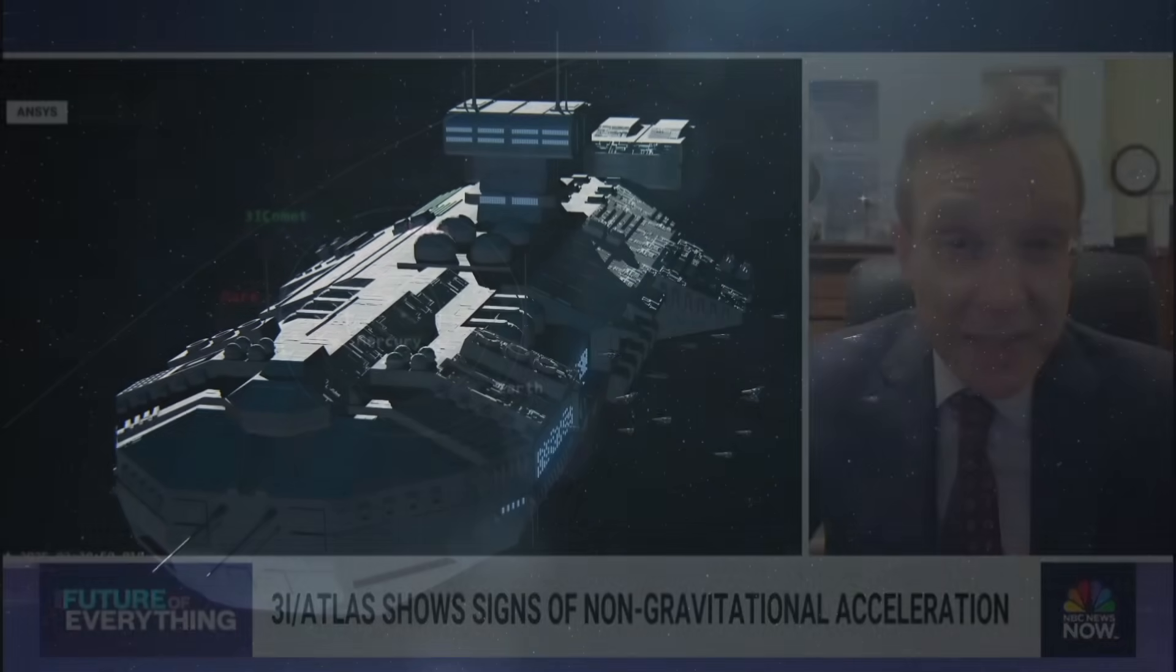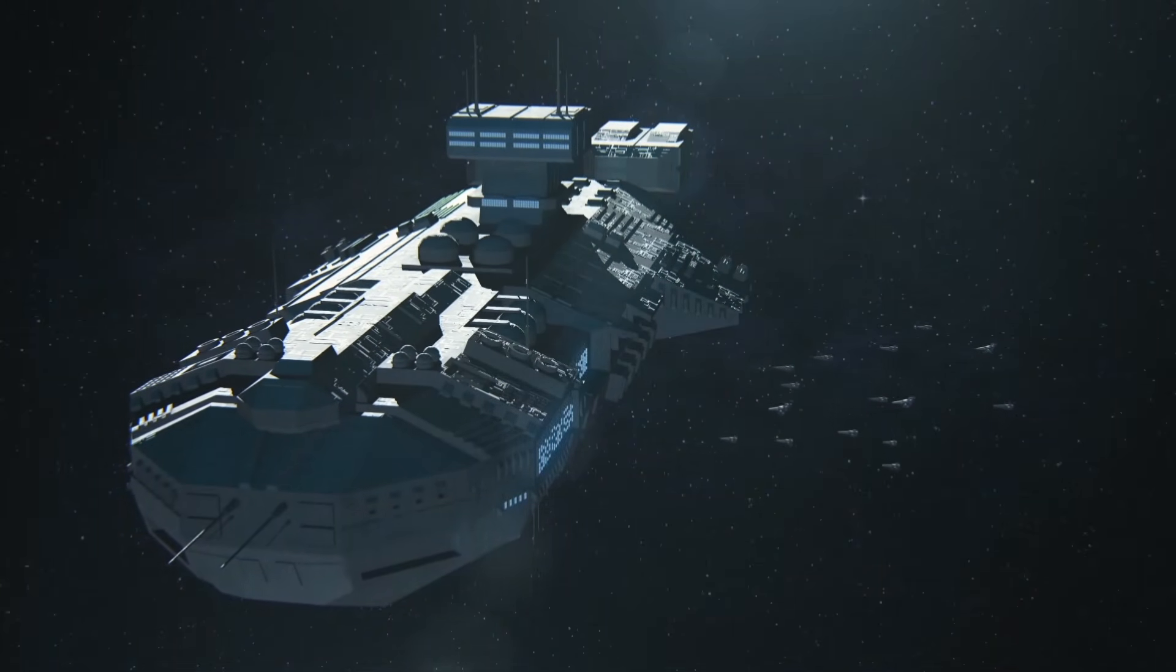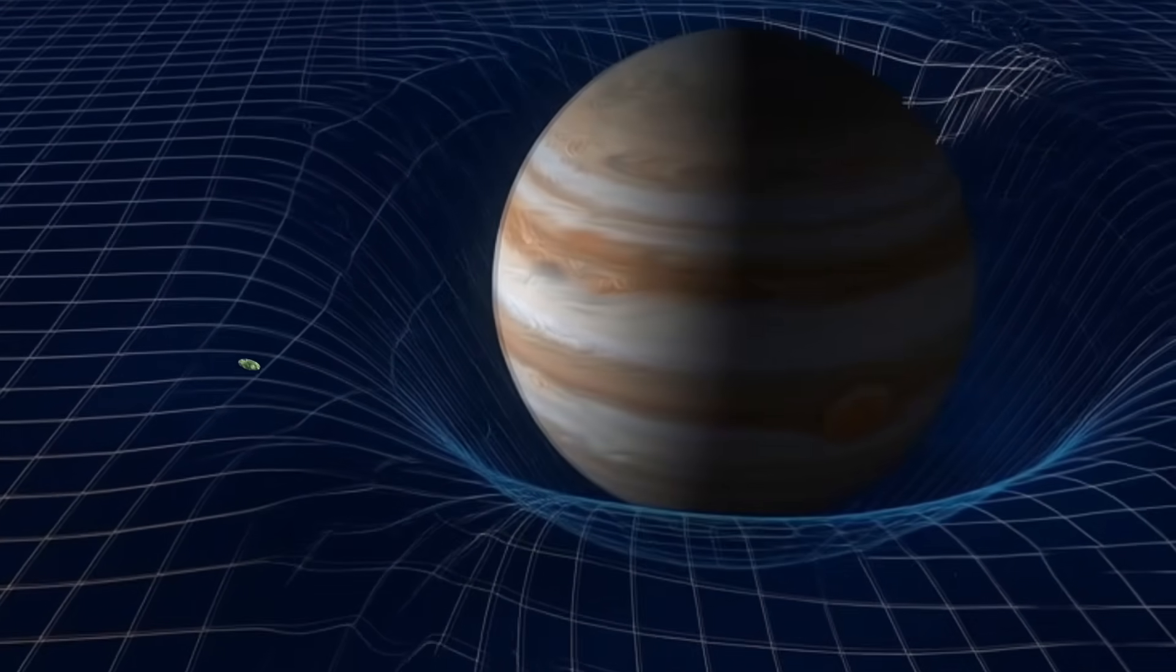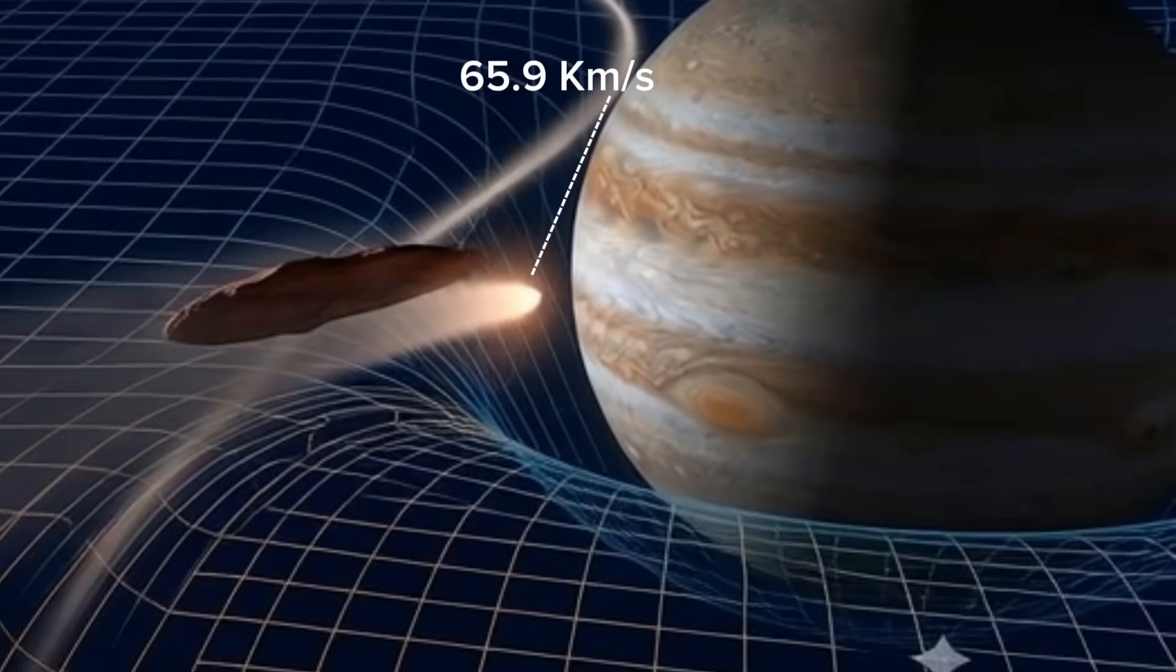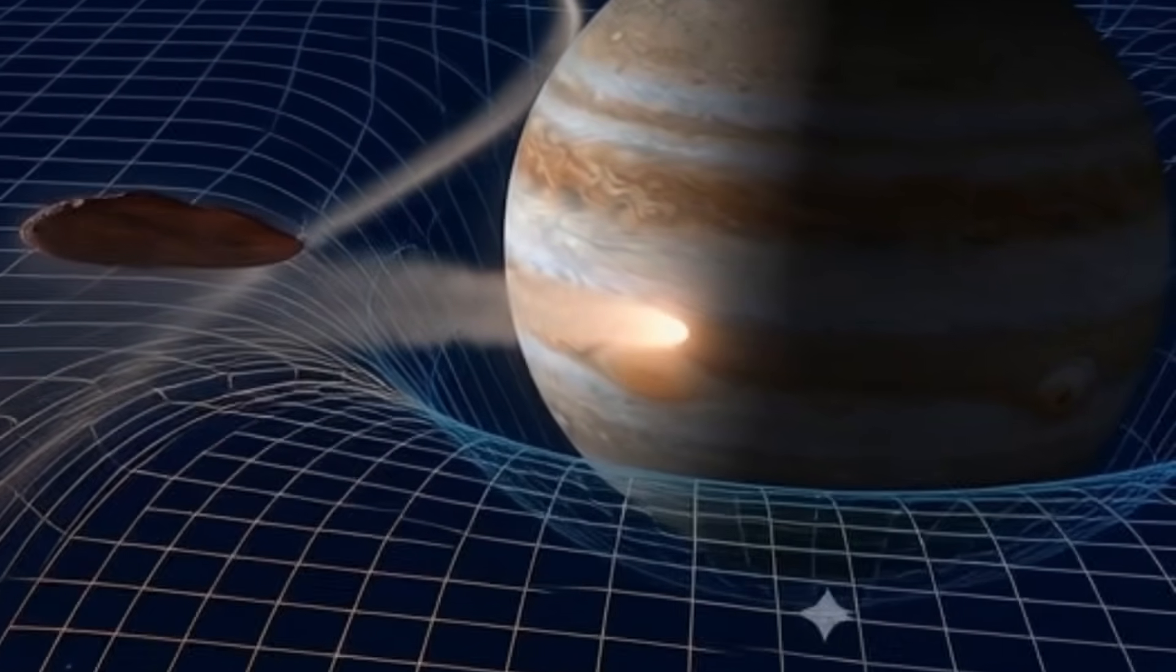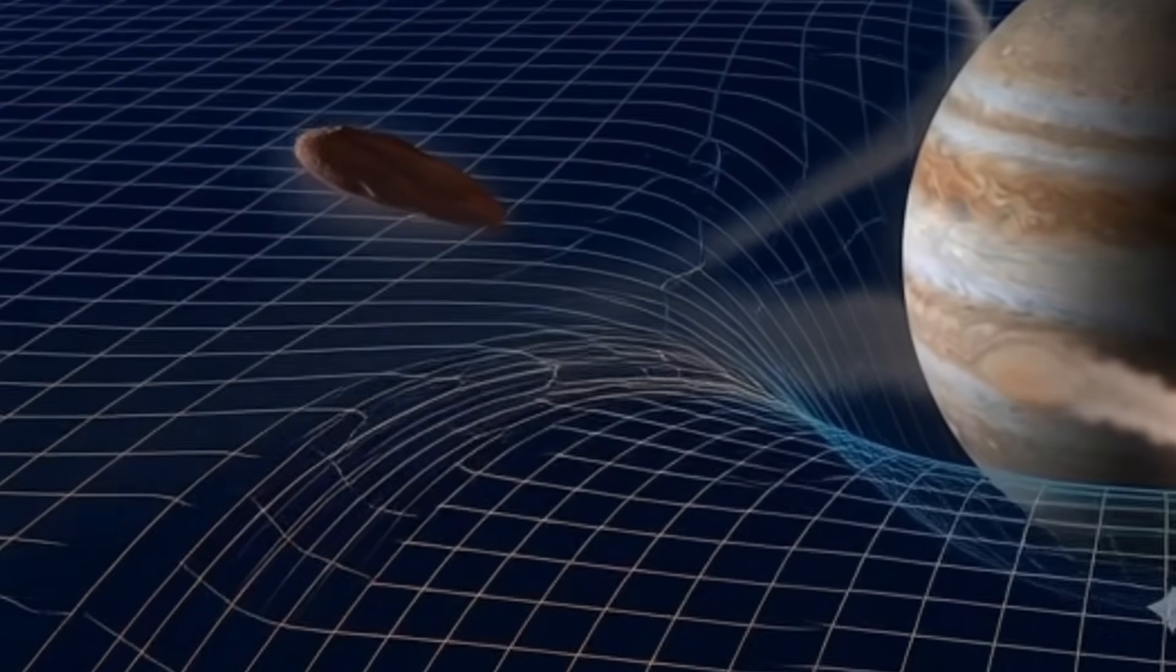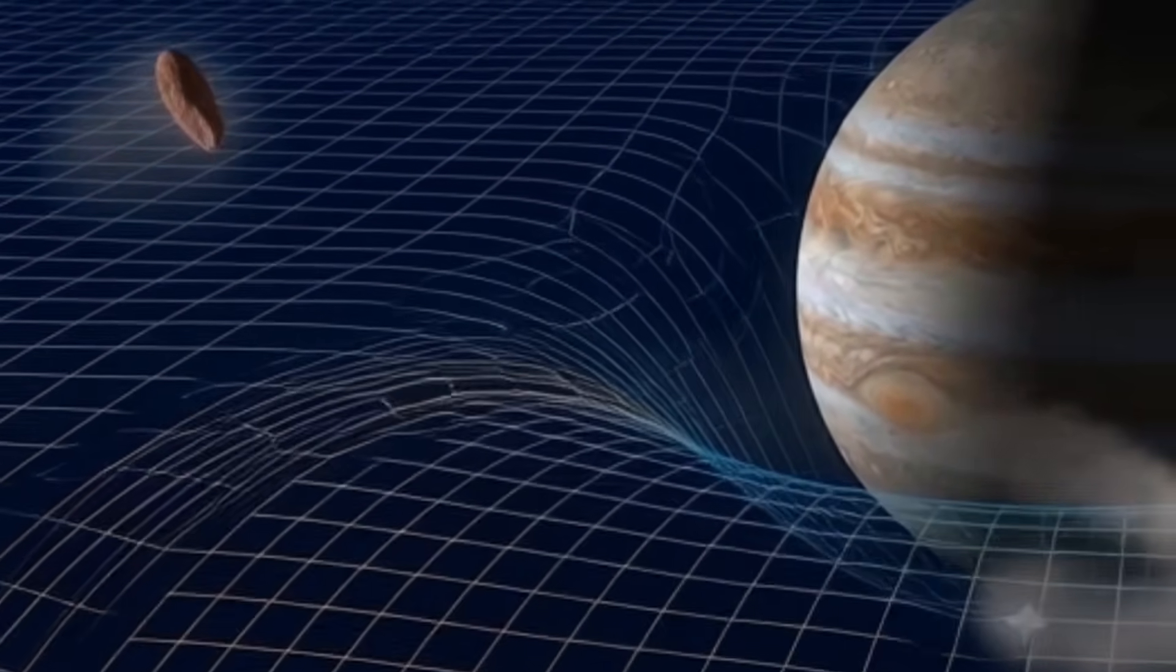Avi Loeb suggests that if 3i Atlas is carrying mini-probes or some kind of devices, they could be released right at the edge of Jupiter's hill sphere. At that point, those objects would only need to fire their engines to cancel their high relative speed, which is about 65.9 kilometers per second. By reducing their speed, the released probes could almost become stationary, making it easier for Jupiter's gravity to pull them in and possibly capture them. Meanwhile, the main body of 3i Atlas would continue its journey and fly past Jupiter, escaping the hill sphere.